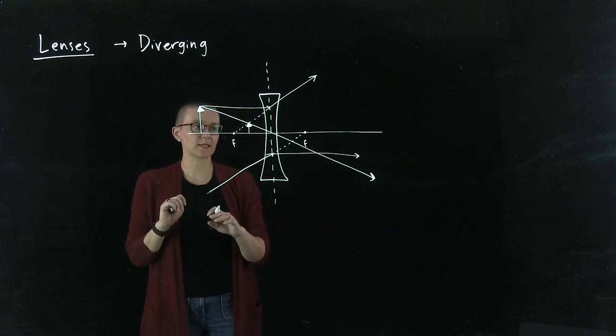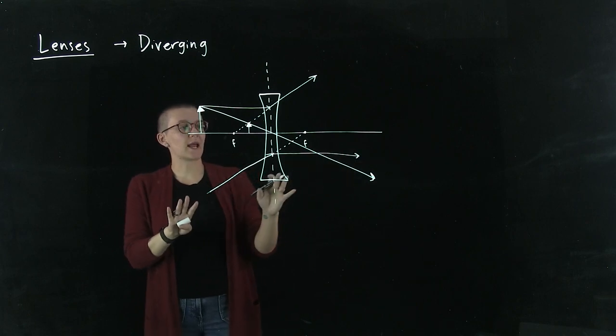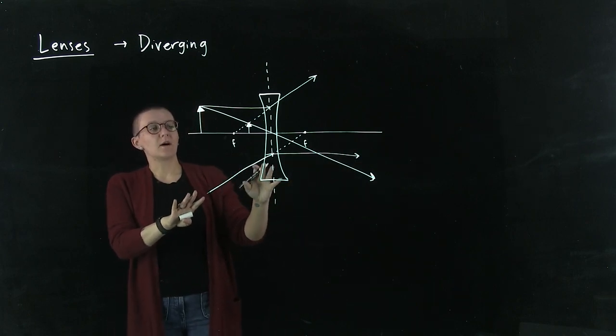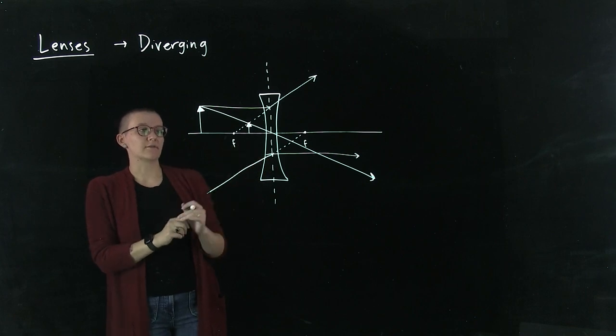This light ray is not coming from this object. I'm just showing you this other ray as another option you can draw if you're looking for an image of a diverging lens.